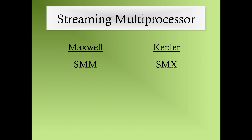Now we can dig into the streaming multiprocessors. They're very important — I think of them as the heart of the architecture. Streaming multiprocessors perform all the actual computations and have their own control units, execution pipelines, caches, and registers. NVIDIA refers to them in a couple of different ways: in the previous architecture, Kepler, they're called SMX; in Maxwell they're called SMM; and when comparing both architectures together they're just called SM. It was a bit confusing at first, but once you figure it out it makes sense.